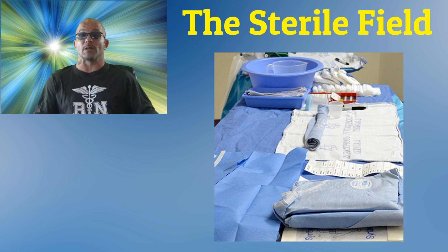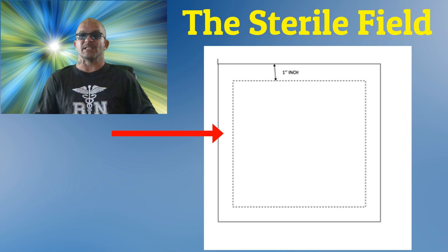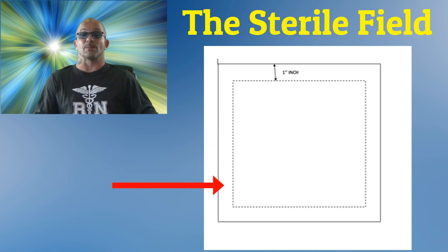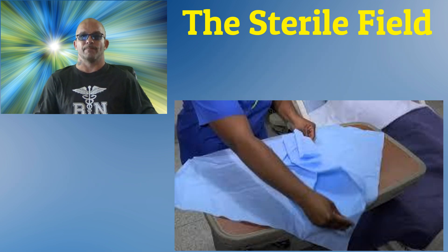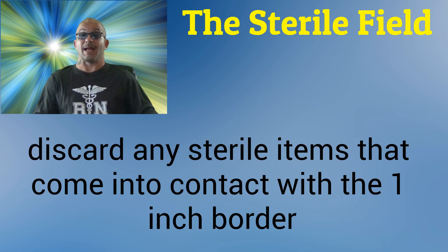We must include only sterile items in our sterile field. The packaging's outer wrapper will have an outer edge or border that is approximately one inch. This one-inch area is the only non-sterile portion of the wrapper. We utilize this one-inch area to position the field on the table surface, grasping this one-inch border before applying our sterile gloves. We must discard any sterile items that come into contact with this border.